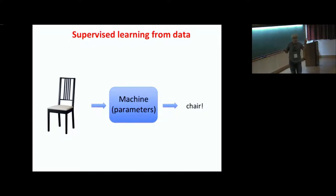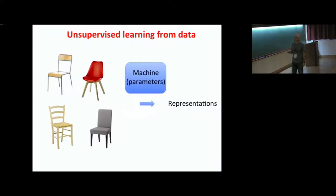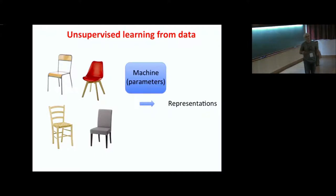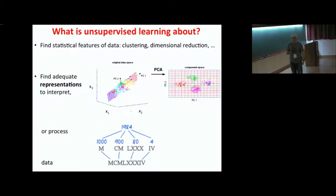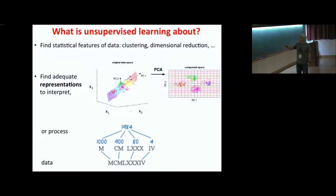What I'm interested in is not supervised learning — it's unsupervised learning. You are given the same set of images of chairs, but you are not given the output. What a machine should do is try to make some kind of representation, and this representation should achieve different goals. One goal we already saw on Monday is that the representation should be useful to find important statistical features in the data — for instance, to do dimensionality reduction.